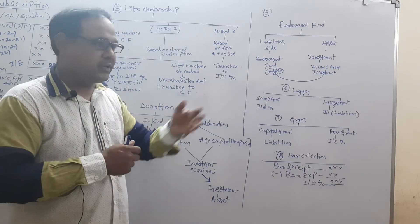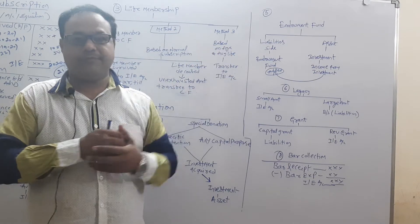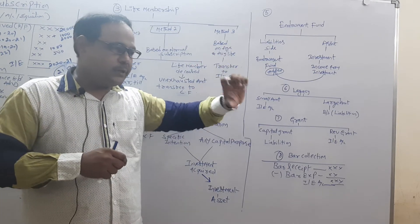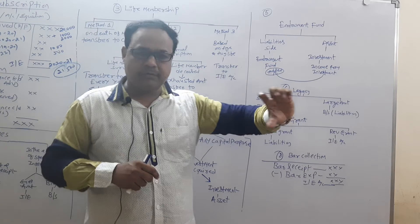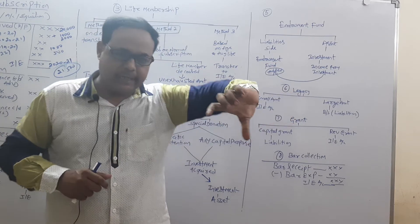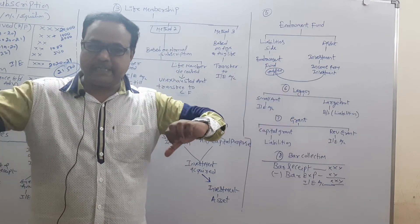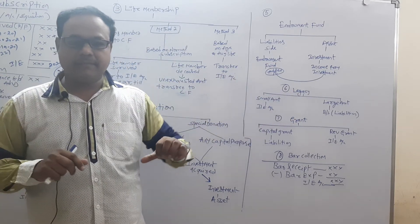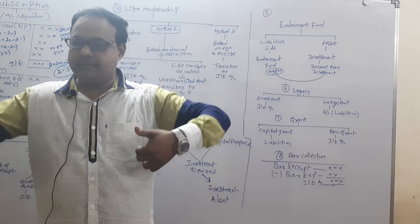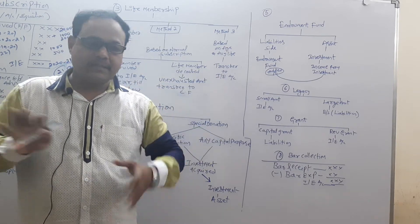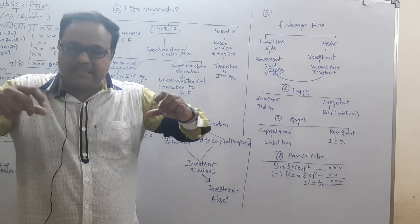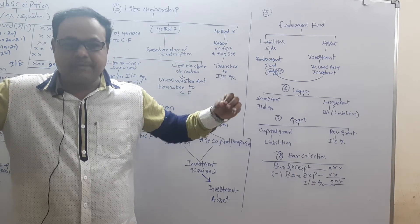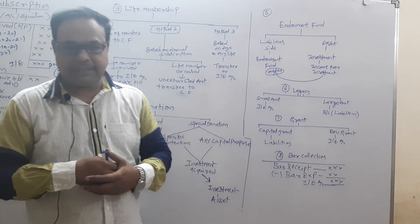Method number three: based on the age and average life expectancy using slabs. For example, age group 20–25 years: life membership period is 20 years; age group 25–30 years: 15 years. The slabs will be mentioned in the problem accordingly.